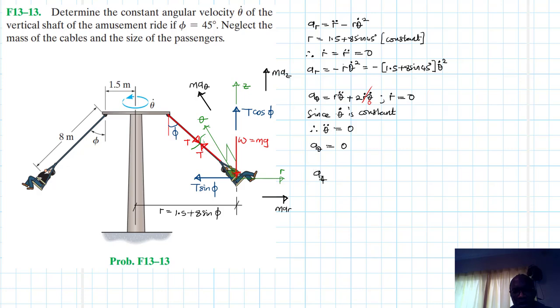Then A Z is just equal to Z double dot. We don't have any movement in that direction. Theta dot is equal to Z double dot, which is just equal to 0. Having done this, we can apply the equations of motion.